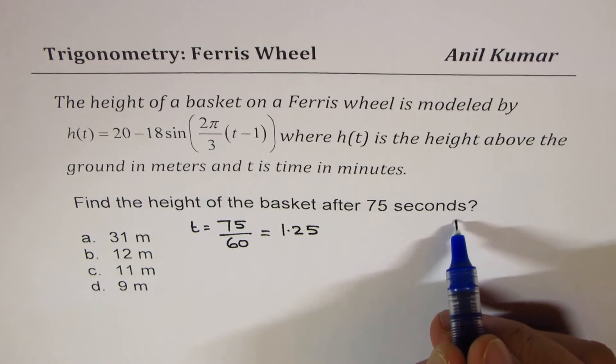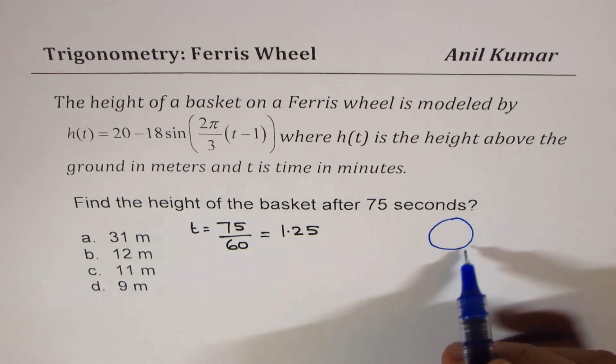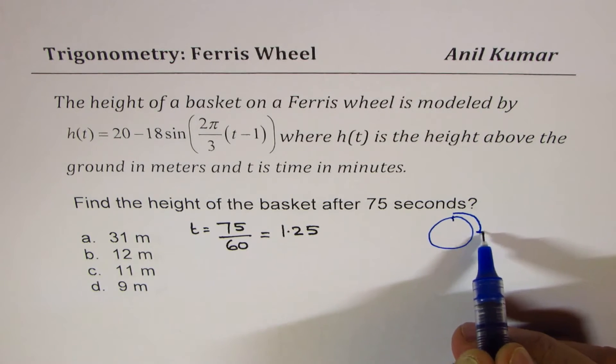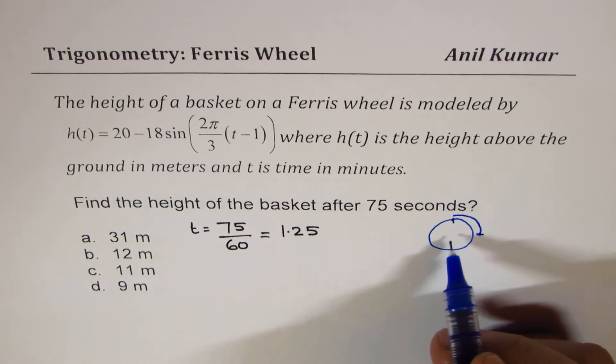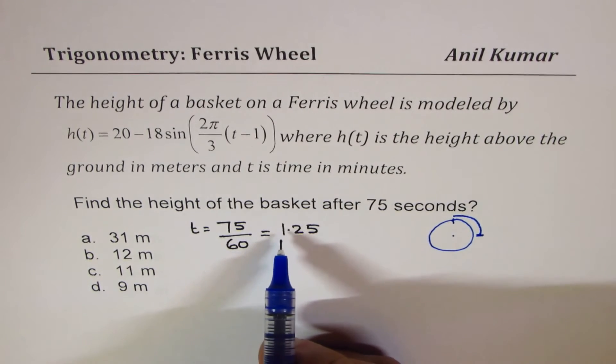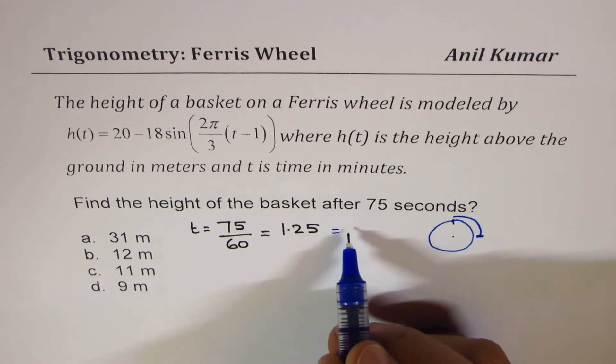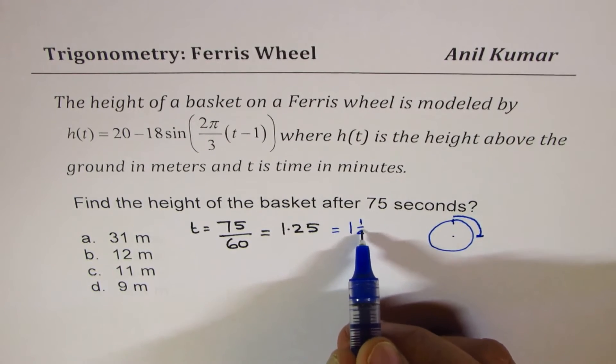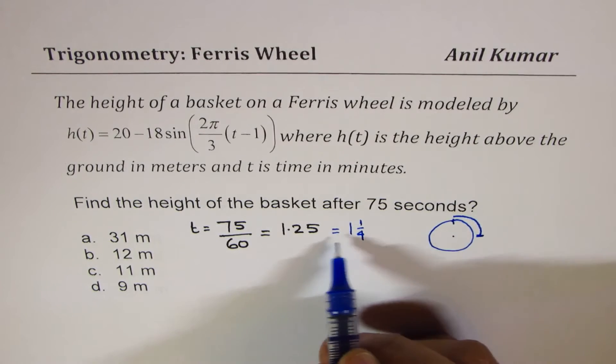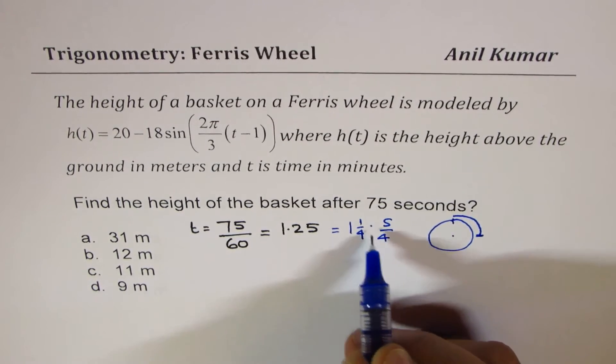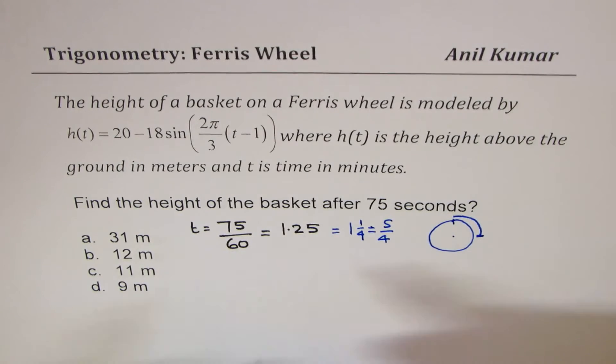You see how we get it. 75 seconds means you go 1 full cycle, 1 full and then 15, 60 plus 15. So that is a quarter. So you could write 5 over 4. These are different ways when you can write this particular thing.